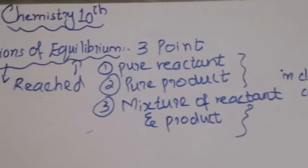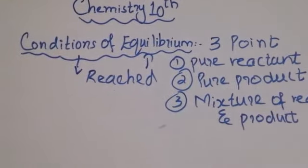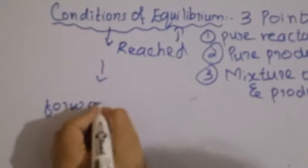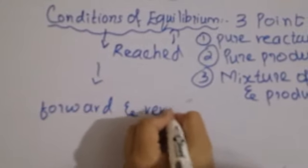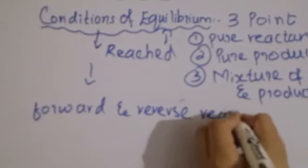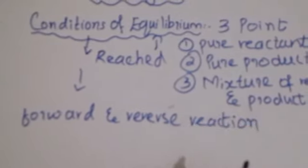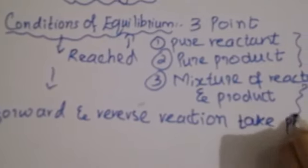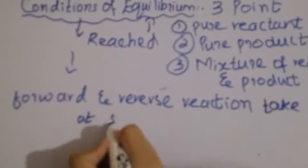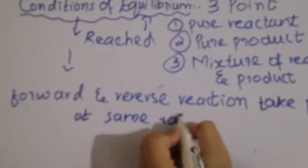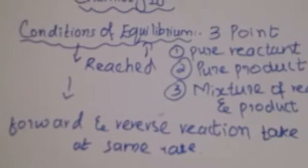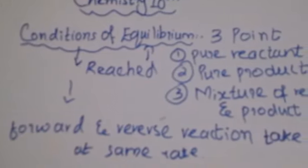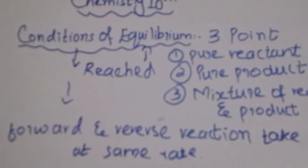In this case, we have a forward and reverse reaction. The forward reaction converts reactants to products, and the reverse reaction converts products back. Both the forward and reverse reactions take place at the same rate. This means that at the same time, these two processes are happening simultaneously at an equal rate.